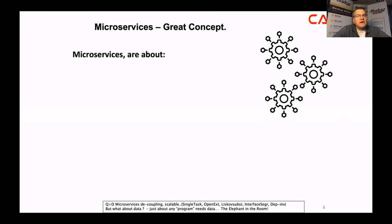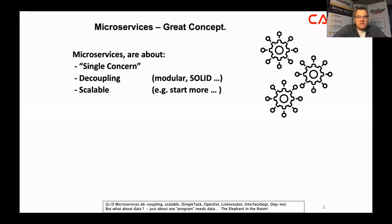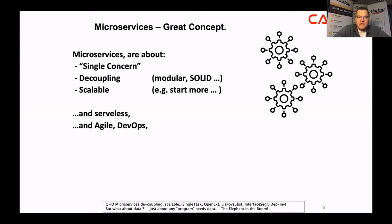Microservices are a great concept and they pop up all over the place. Microservices are about doing a single concern — a microservice does one thing and tries to do that well. It's also about decoupling, so you end up with modular components. You should read up on the SOLID principles for object-oriented design. Microservices are supposed to be truly scalable — you can start a thousand of them, though you are not Netflix.